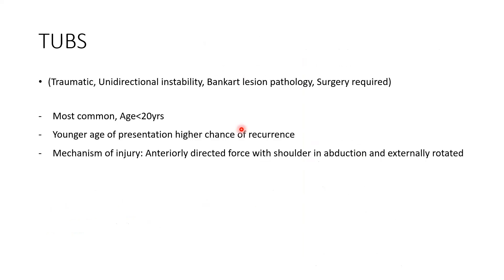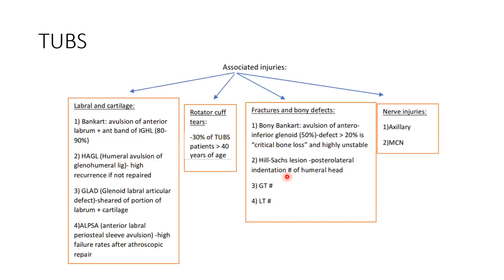Associated injuries with TUBS are mostly labral and cartilage lesions. The Bankart lesion is at the anterior inferior labrum. The HAGL lesion — humeral avulsion of glenohumeral ligament — needs to be identified because if not repaired, there is a high recurrence rate. The GLAD lesion — glenoid labral articular defect — is a lesion at the Bankart site where part of the labrum and cartilage surface is shaved off.